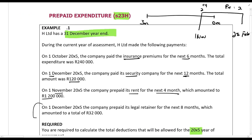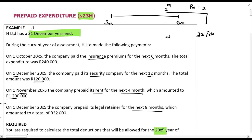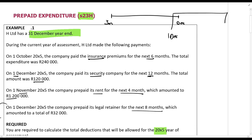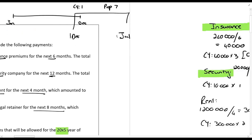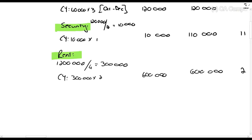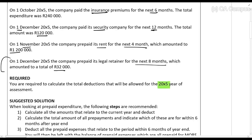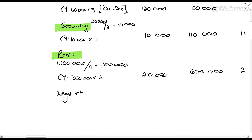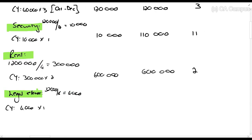Then on 1 December the company prepaid its legal retainer for the next eight months, which was R32,000 in total. Prepaying from December through July — so one month is in the current year and seven months are prepaid. R32,000 divided by eight = R4,000 per month. Current year: R4,000 times one = R4,000. Prepaid: seven times R4,000 = R28,000.